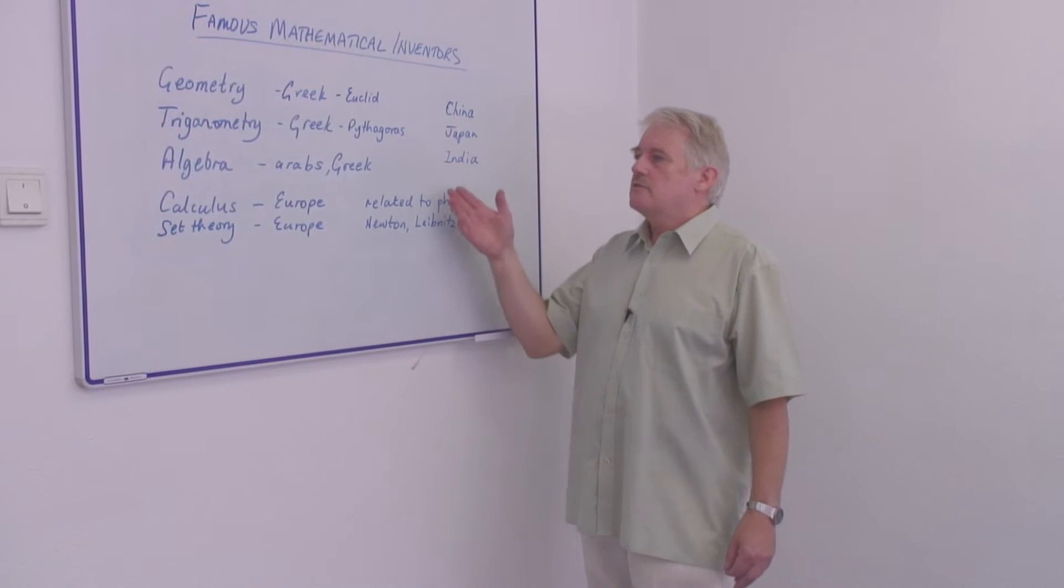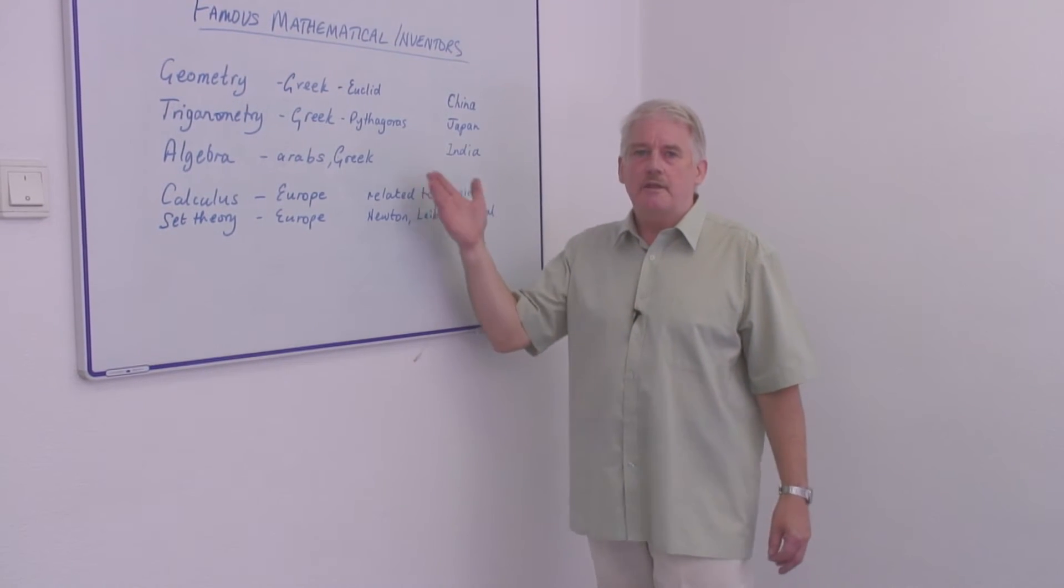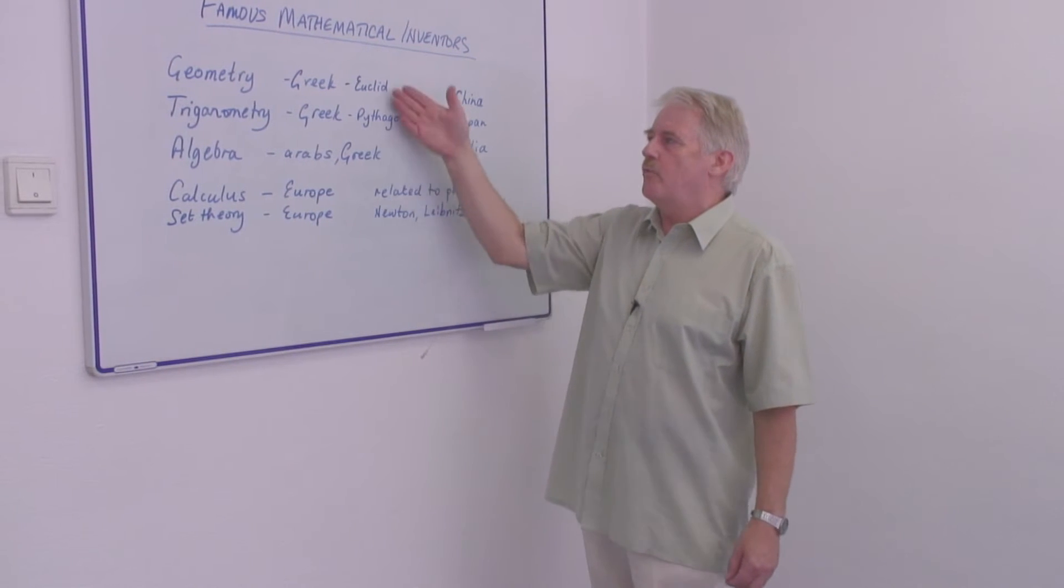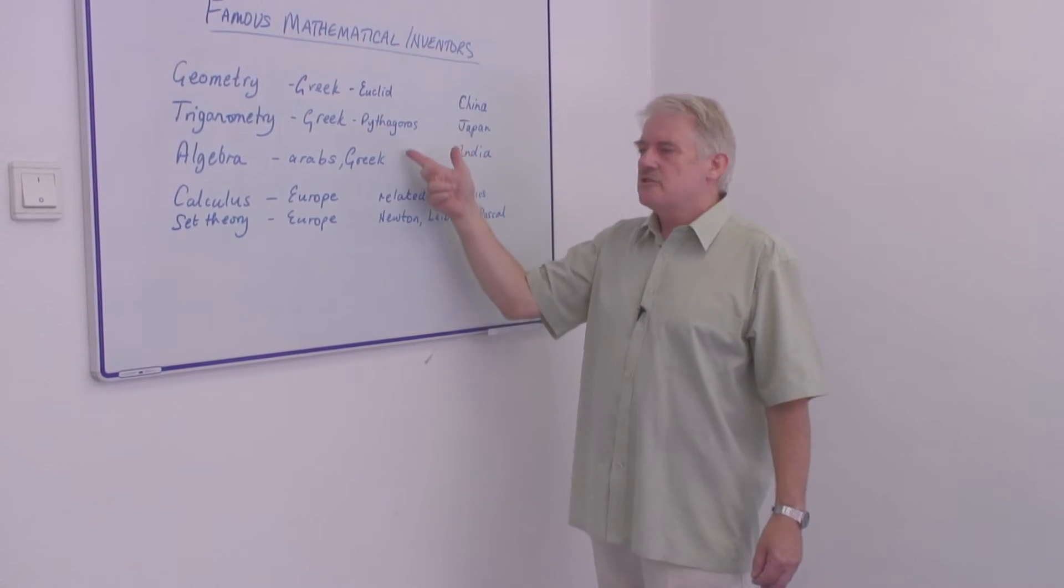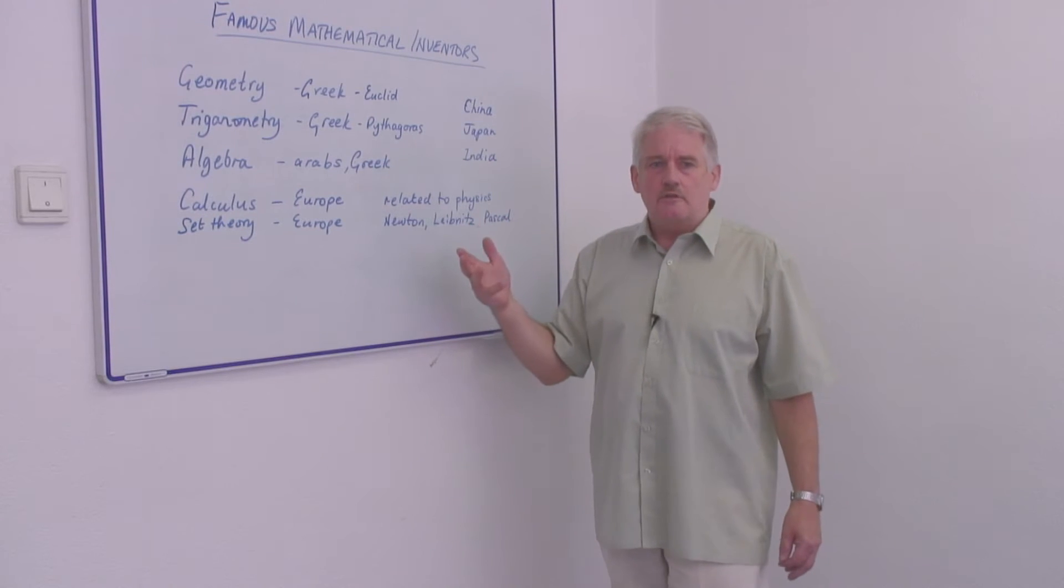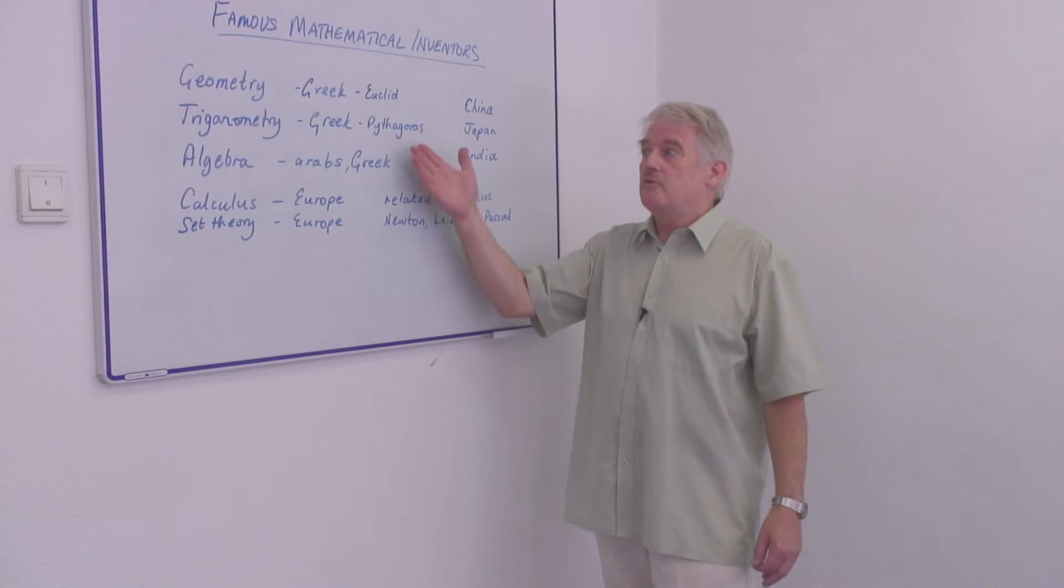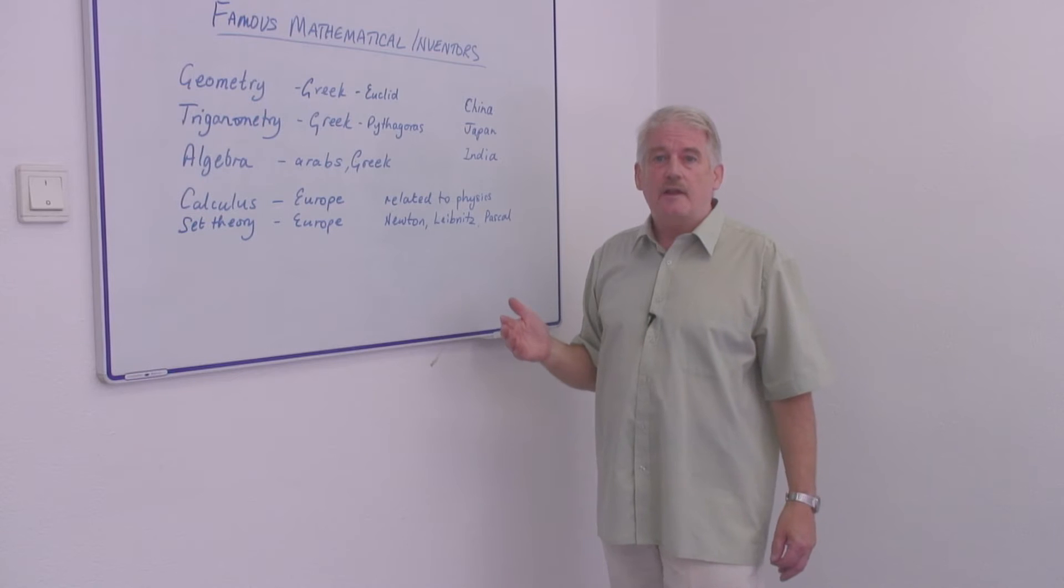It was not until much later that things like algebra began to develop, although algebra was developing in some ways with geometry and trigonometry. Algebra was a different science and this developed with the Greeks and the Arabs through the first 2000 years of development of mathematics.